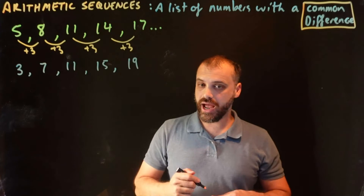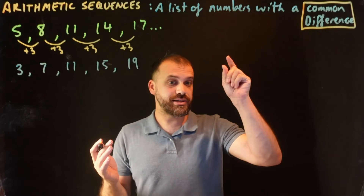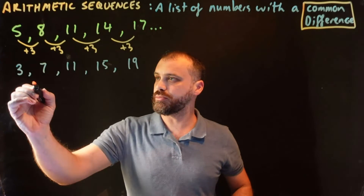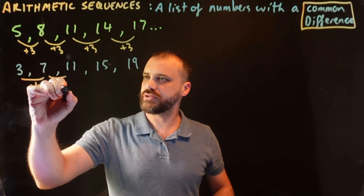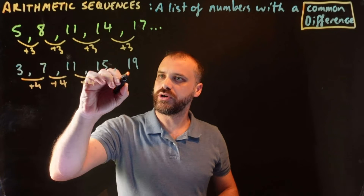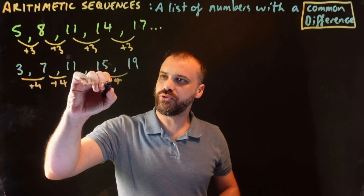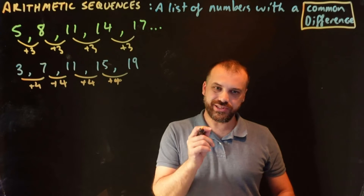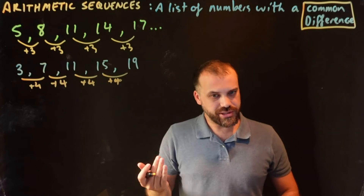Here is another arithmetic sequence. It's an arithmetic sequence because it has a common difference: plus four, plus four, plus four, plus four. That's an arithmetic sequence. Let's look at two more that might be surprising.